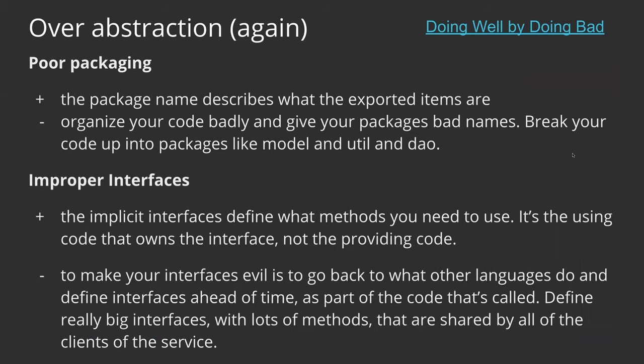Let's come back to abstraction. I picked another source — it was a conference talk about how we can use Go in the wrong way, comparing what you can do well and badly with the same thing. When I think about abstraction, three things come to mind. First: poor packaging — when we mess up packages, splitting code between packages without clear concerns and separation of responsibilities.